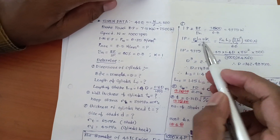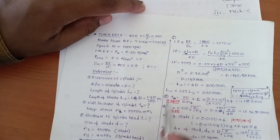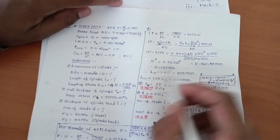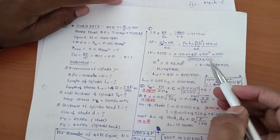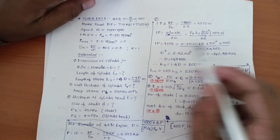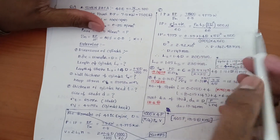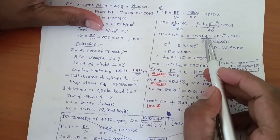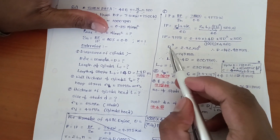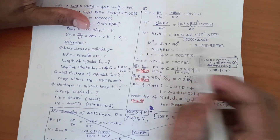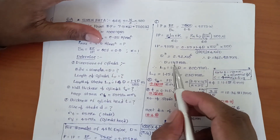Substituting into the IP formula: IP equals P_M × L_S × A × n × K / 60. P_M is 0.35, L_S is 1.4D/1000, A is π D² / 4, n is 500, K is 1. After solving, we get an expression in terms of D³. Solving for D gives D³, and taking the cube root, D equals approximately 142.99 mm, which we round to 143 mm.